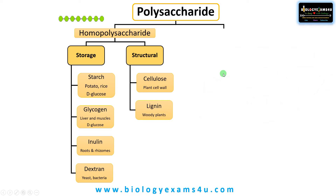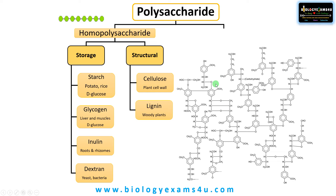The second structural polysaccharide is lignin, widely present in woody plants. It is a complex polymer made up of phenylpropanoid units and methoxy-substituted phenylpropane units. It acts like a glue that strengthens and reinforces the plant cell wall, especially in woody plants.